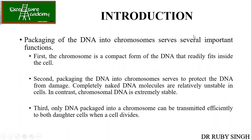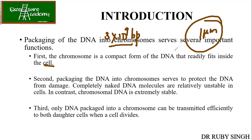Packaging of DNA into chromosomes serves important functions. First, it is a compact structure that fits inside the cell. We have around 3 × 10⁹ base pairs of DNA. If stretched out, it would be very lengthy, so in order to accommodate inside the 1 micrometer-sized cell, the DNA needs to be in condensed form. The packaging also serves to protect DNA from damage — completely naked DNA molecules are unstable in cells, whereas chromosomal DNA is stable.